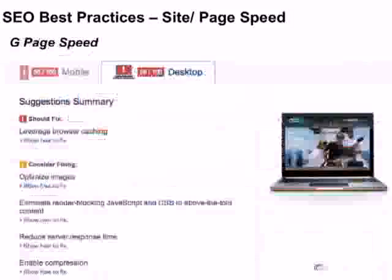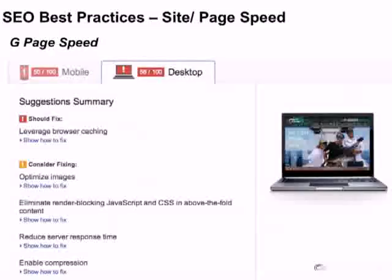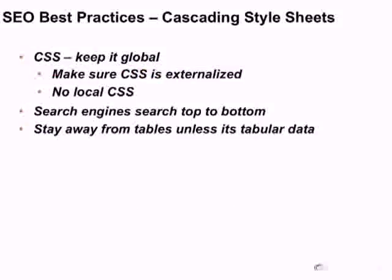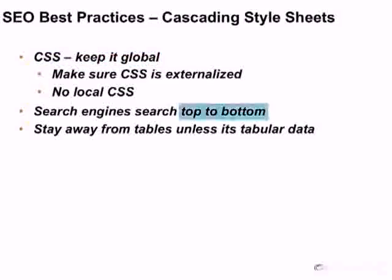We can go into a lot of detail here, but just test your website and make sure it's doing well. Google PageSpeed will give you suggestions on browser caching, optimizing your images, and eliminating redundant CSS and JavaScript. The main best practices here: keep your CSS global and externalized — calling it from an external file, not inline within your HTML or PHP. Don't use local CSS to style fonts and headings. Search engines scan from top to bottom, so keyword proximity matters — keep important content at the top.